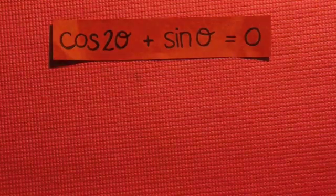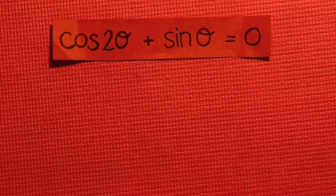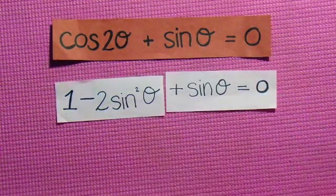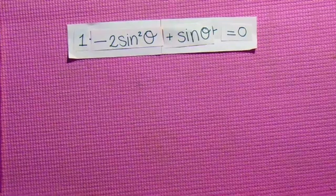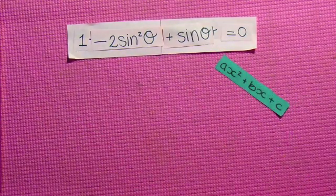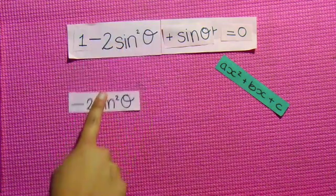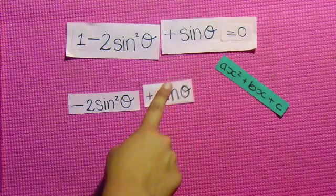Now that we know the trig identity to use, I will rewrite my equation to 1 minus 2sin²θ plus sinθ equals 0, and the rest stays the same. We have our equation which actually looks like a quadratic equation.